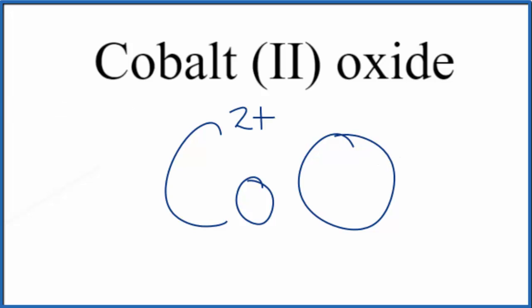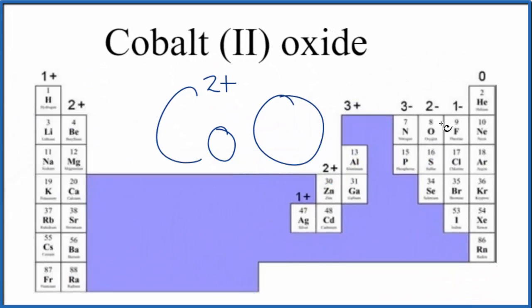Oxygen, let's look that up on the periodic table. Oxygen is right here, in group 16, sometimes called 6A, 2 minus. So we have an ionic charge of 2 minus for the oxygen.